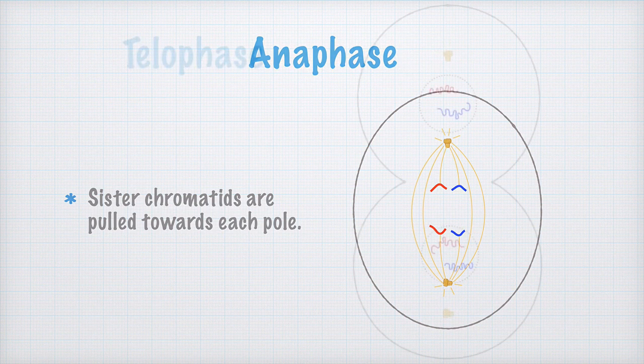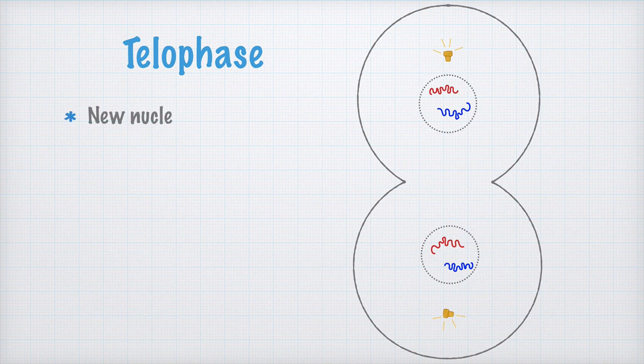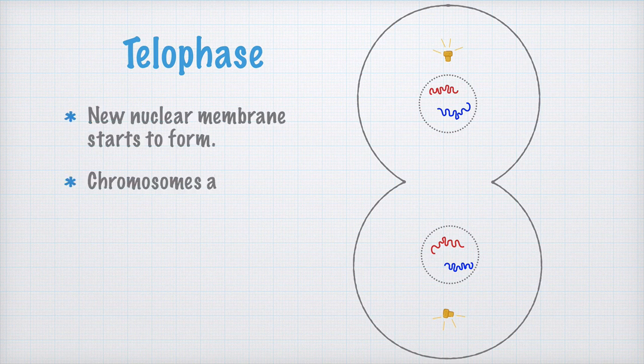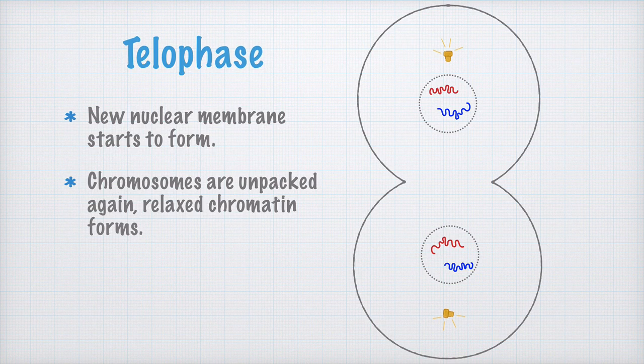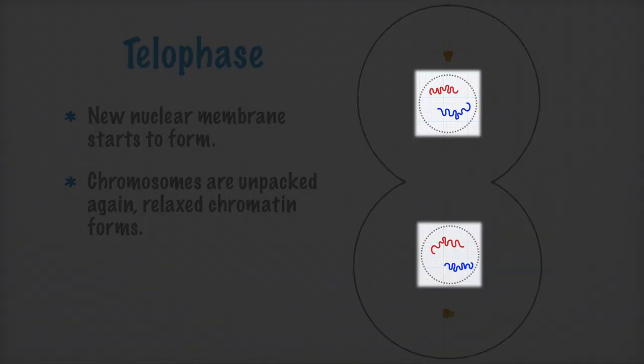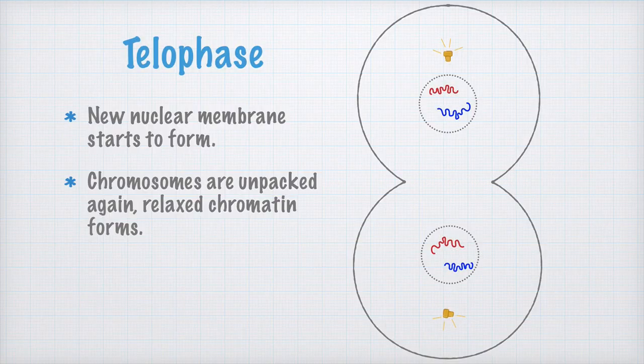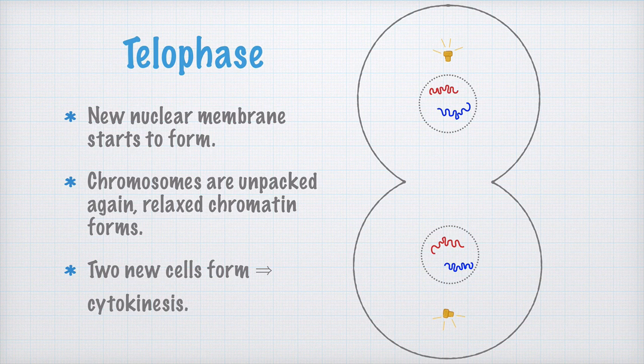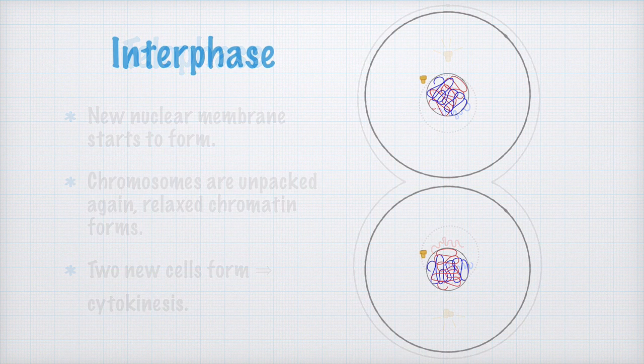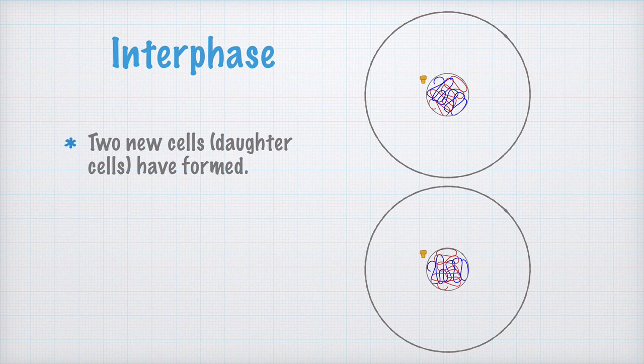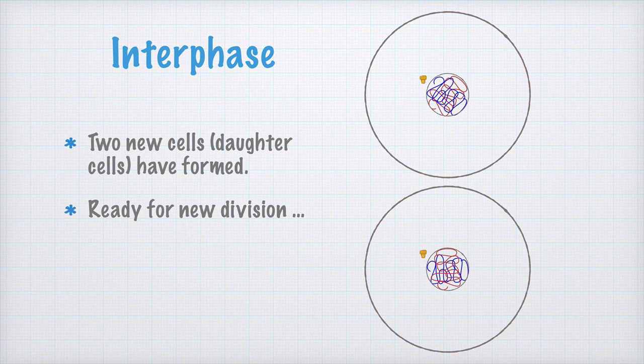Now the cell enters the telophase. During this phase, the chromosome starts to unpack, forming relaxed chromatin again. A new nuclear membrane is formed around the chromosomes, and a cleavage, which divides the two cells from each other, forms. This is called cytokinesis, which literally means cell movement, because the two newly formed cells are seen as moving away from each other. The two daughter cells that have formed enter the interphase of the cell cycle. This means that they are ready for a new cell division if the organism is growing.